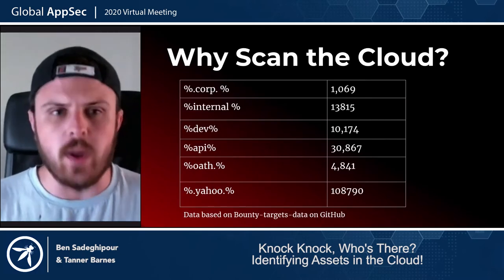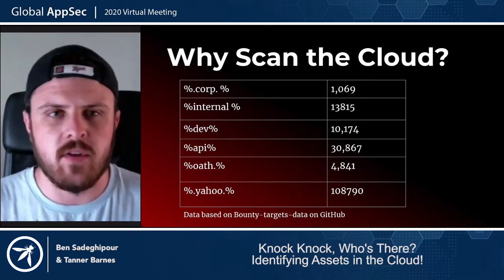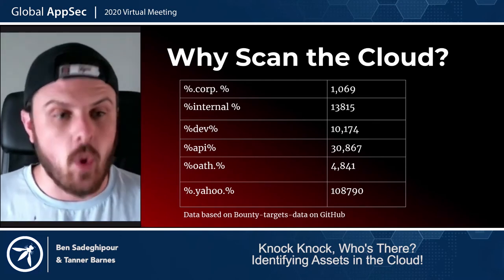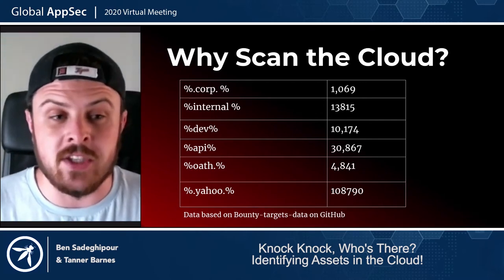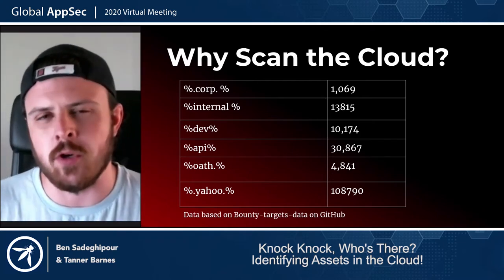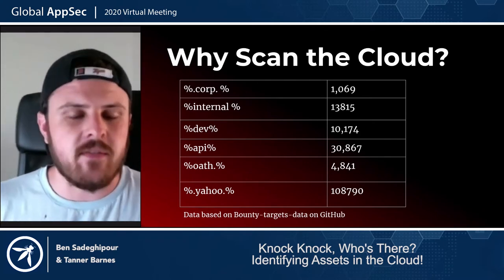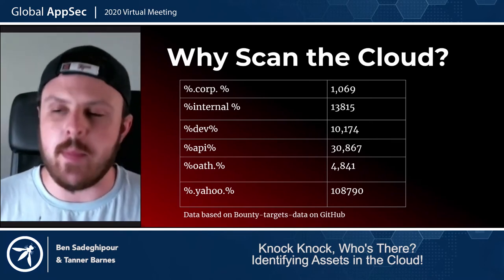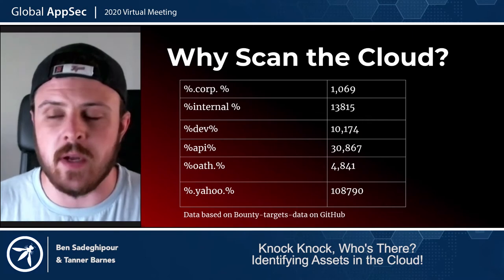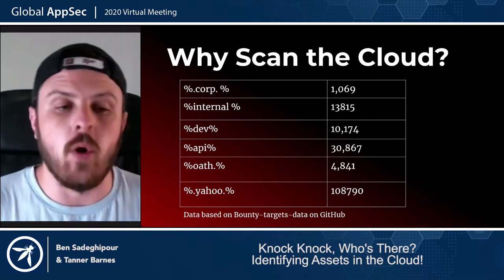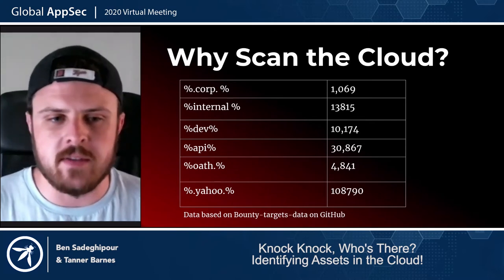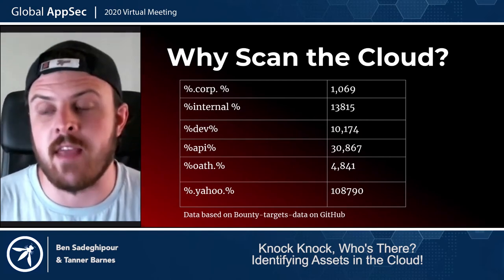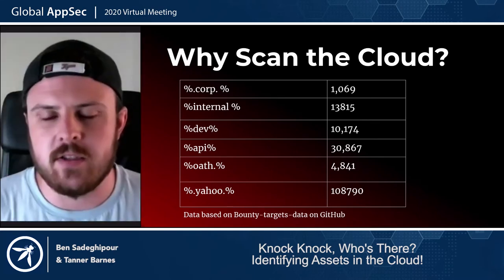Looking at an idea of what's out there, we took stock of common subdomains to get an idea of what might be out there: 1,000 corp subdomains, 13,000 internal subdomains — which we found fascinating that something named 'internal' would be on the public cloud — dev environments as expected, APIs which are super common to have spun up in the cloud. OAuth is an example specific to Verizon, with almost 5,000 of those subdomains. And then Yahoo, the large and ever-popular bug bounty domain, sitting at 108,000 — a huge attack surface.